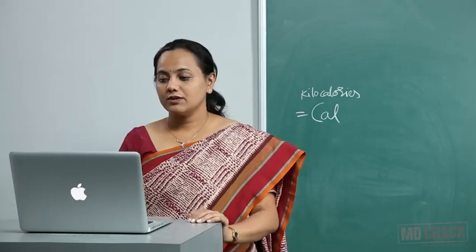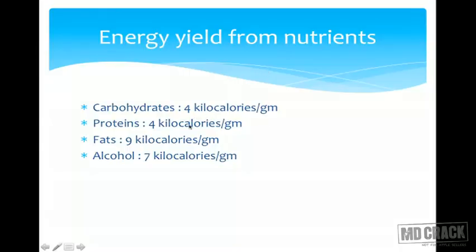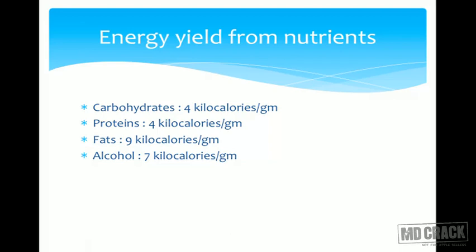Carbohydrates give 4 kilocalories per gram, proteins also give 4 kilocalories per gram, fats give 9 kilocalories per gram, and alcohol gives 7 kilocalories per gram. For example, 100 grams of carbohydrate yields 400 kilocalories, while 100 grams of fat yields 900 kilocalories.